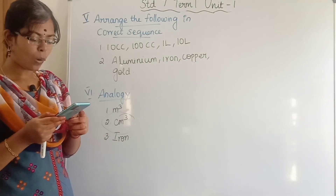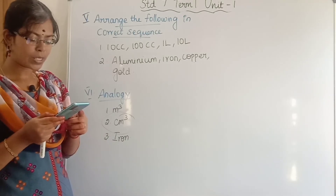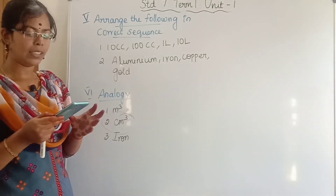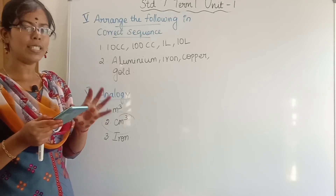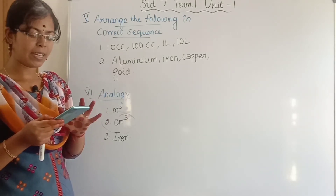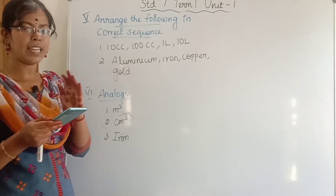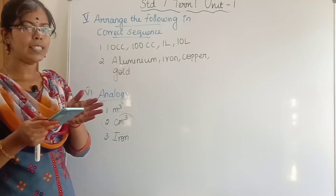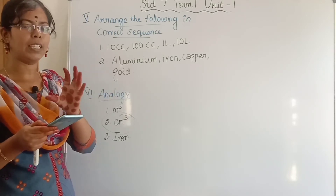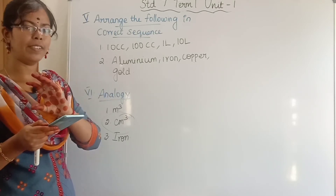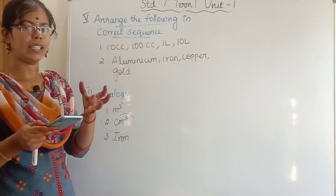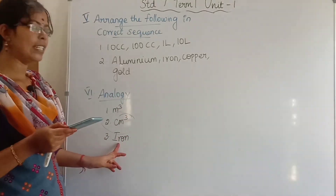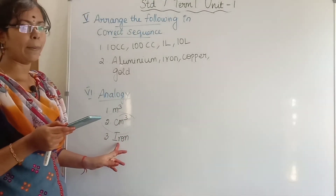Third question involves water, kerosene, and aluminium. Water has a density of 1000 kg/m³. Kerosene has a density slightly less than water. Aluminium has a density that is less than iron.